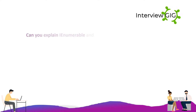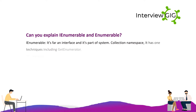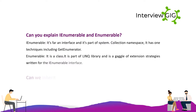What is the difference between IEnumerable and Enumerable? IEnumerable is a foreign interface and is part of the System.Collections namespace. It has one method: GetEnumerator. Enumerable is a class; it is part of the LINQ library and is a group of extension methods written for the IEnumerable interface.